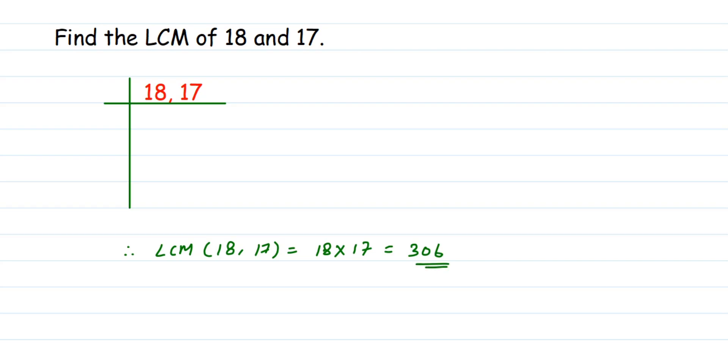But why am I saying this? Let me explain you. We have learned about prime factorization, right? We have to find the prime factors of these two numbers and at the end we will multiply them. So 18 and 17. We know 18 is an even number so it goes in two times tables, so we'll write two here. Two nines are 18. And since 17 doesn't go in any, it's not a multiple of any number, so we'll write 17 here. It's a prime number, so we'll write 17 in every step.